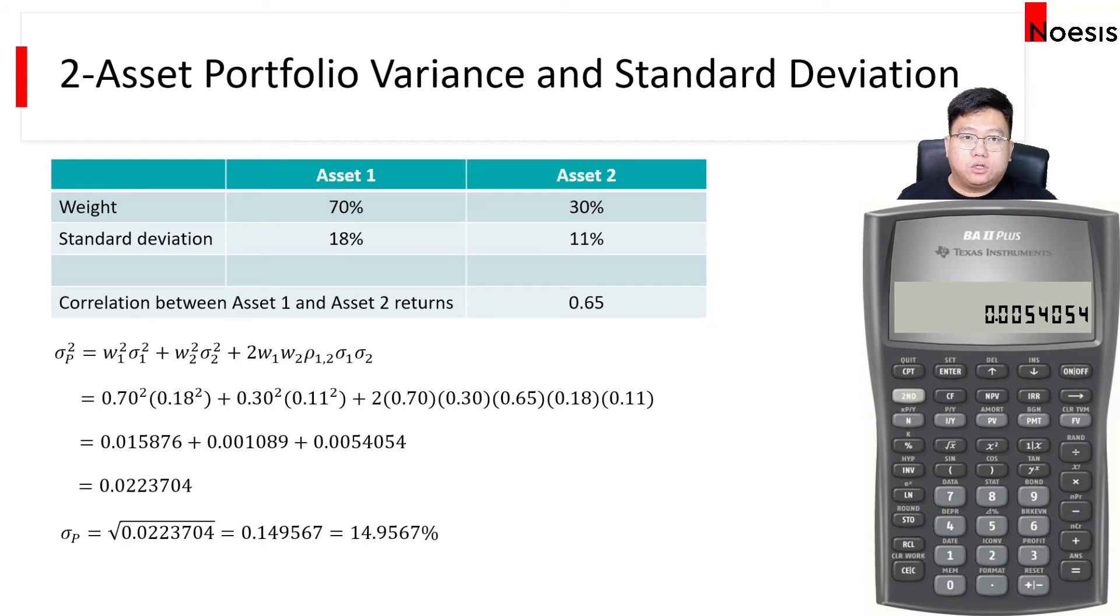And then we are done. So the final thing that we need to do here before we get the variance is to sum up the three numbers that we have saved. To recall it out, I'll press RCL 1. That recalls the first number. Plus recall 2, that recalls the second number. Plus recall 3, which recalls the third number. And then we sum it up. So that equals 0.0223704. This is the portfolio variance.